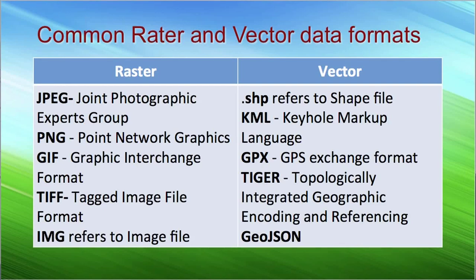These are the common raster and vector data formats. For raster data: JPG is a widely known format used in mobile phones and cameras. PNG — Portable Network Graphics — and GIF — Graphics Interchange Format — are also raster formats. TIFF — Tag Image File Format — and IMG format are used for satellite images. For vector data: SHP is the shapefile format commonly used in GIS platforms. KML — Keyhole Markup Language — is particularly used in Google Earth. GPX is used for capturing GPS and GNSS data. Tiger and GeoJSON are also popular vector data formats.